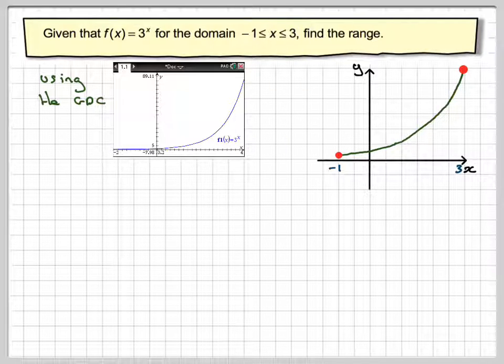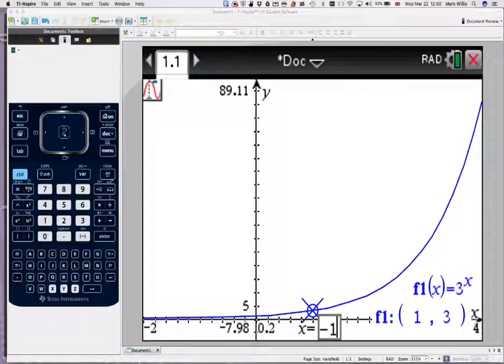Now, to find the range, the range is the value of y that goes with these two values. So one way to do it on the GDC is to go to the graph trace, and then enter the lower value in at minus 1.